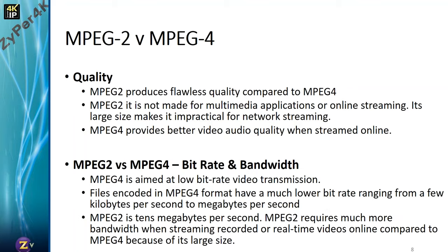MPEG-4 achieves better streaming quality by providing a lower bit rate transmission. With our existing MPEG-2 products we're encoding at around 24 megabytes per second, and with our MPEG-4 products typically around 8 megabytes per second. At this point I'll ask Chris to launch the first poll question, which relates to your familiarity with MPEG-2 and MPEG-4 and what formats you may have used.